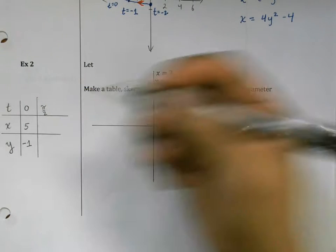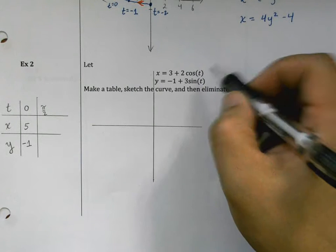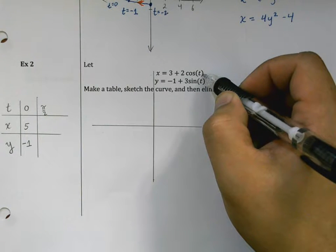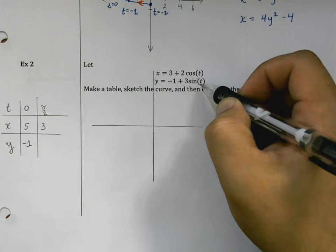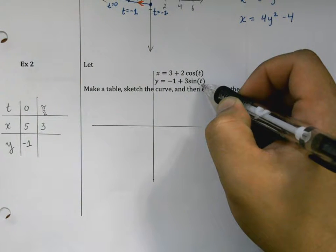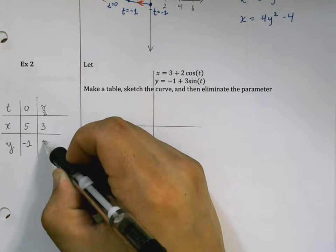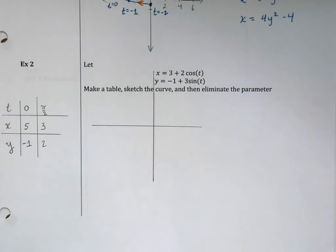When t equals π/2, cosine of π/2 equals zero, so x equals three. Sine of π/2 equals one, so this is going to give me two. Then I'm going to go next to when t equals π.